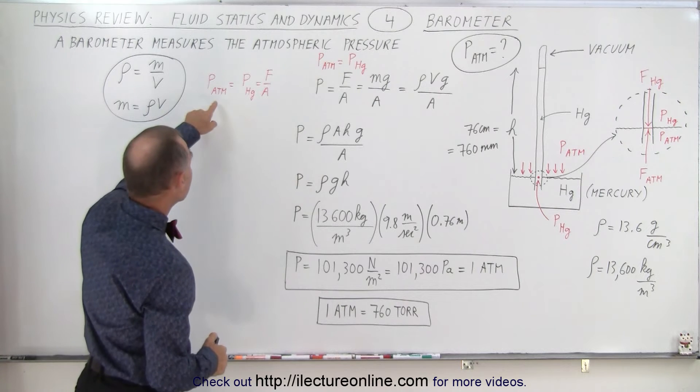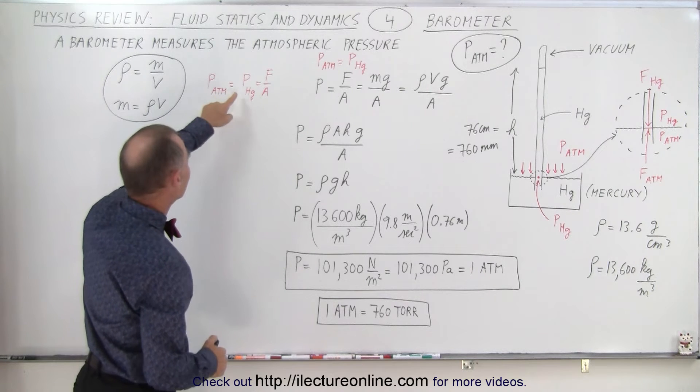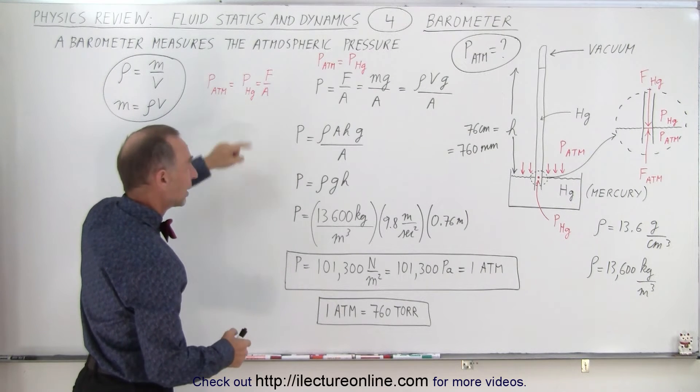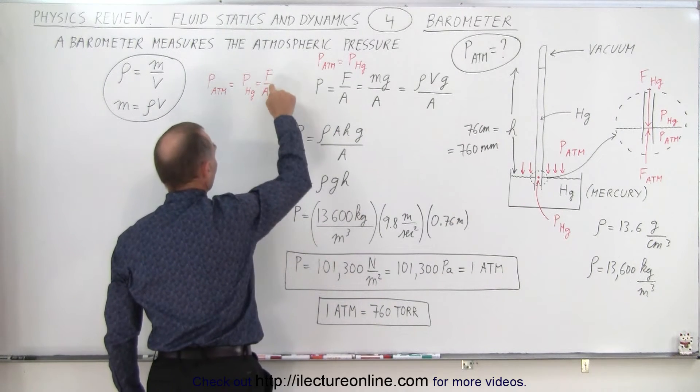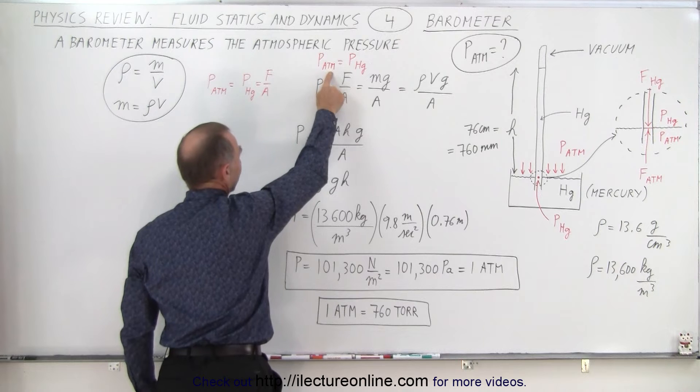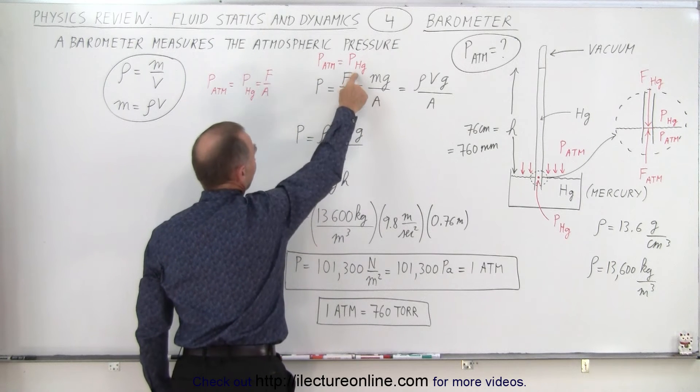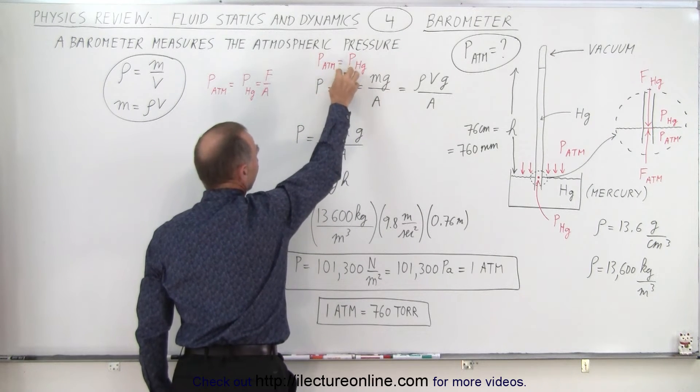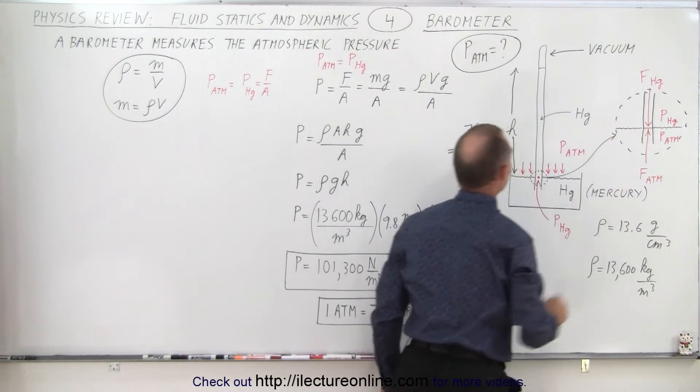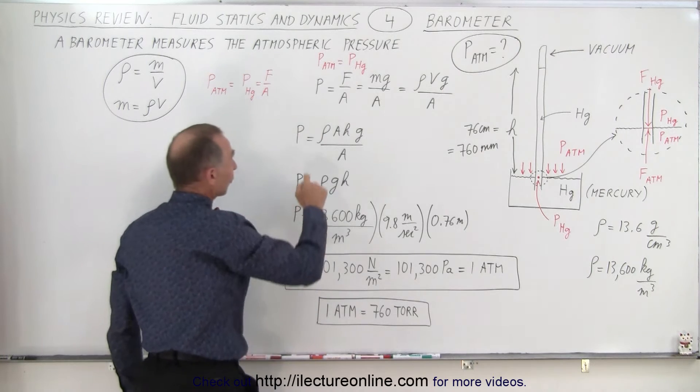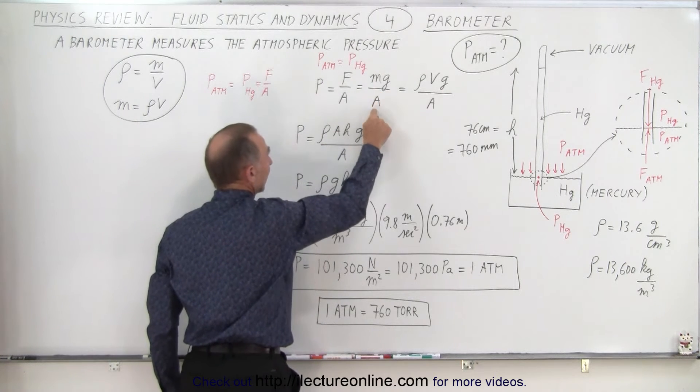So if we then start with the idea that the atmospheric pressure is equal to the pressure caused by the mercury at this particular point, and the pressure of course can be described as force over area. So we have the pressure of the atmosphere equals the pressure of the mercury, and the pressure of the mercury will be equal to the force caused by the mercury divided by the cross-sectional area of the tube right there. And the force will be the weight of the mercury divided by the area.